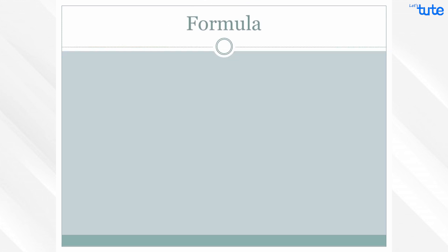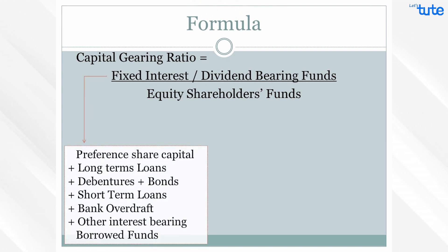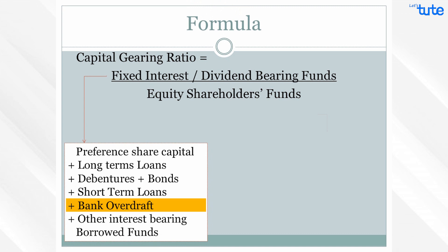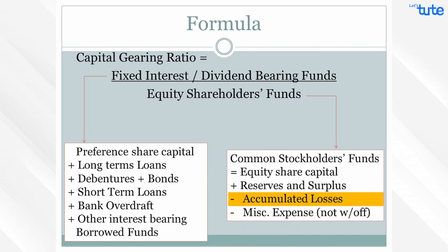So now let's look at the formula of capital gearing ratio. It is calculated by dividing fixed interest or dividend bearing funds by equity shareholder funds. Fixed cost bearing funds is the total of preference share capital, long-term loans, debentures, bonds, short-term loans, bank overdraft, and other interest bearing borrowed funds. Equity shareholder's funds equals equity share capital plus reserves and surplus, less accumulated losses, less any miscellaneous expenditure appearing in the balance sheet which are not yet written off.